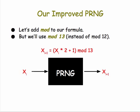Let's get back to our PRNG formula and add in this idea of modular arithmetic. In this case, we're going to use mod 13 instead of mod 12. So here we have a formula where x sub i+1 is calculated by taking x sub i, multiplying it times 2, adding 1, and then taking the remainder mod 13. So if x sub i is 10, then 10 times 2 is 20, plus 1 is 21. Mod 13 gives us 8. And if we take 8 and plug that in, then 8 times 2 is 16, plus 1 is 17. Mod 13 gives us 4 — the next number in our series.